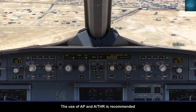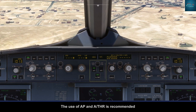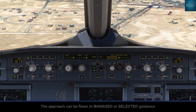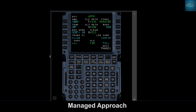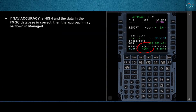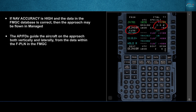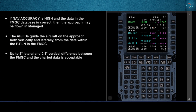The use of autopilot and autothrust is recommended. The approach can be flown in managed or selected guidance. For a managed approach, if navigation accuracy is high and the data in the FMGC database is correct, then the approach may be flown in managed. The autopilot and flight directors guide the aircraft on the approach both vertically and laterally from the data within the flight plan in the FMGC.